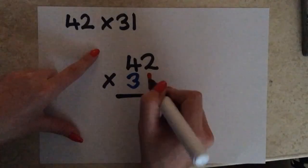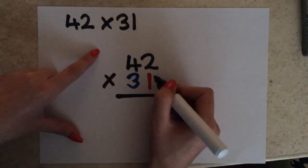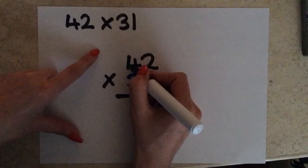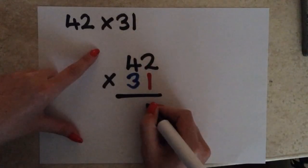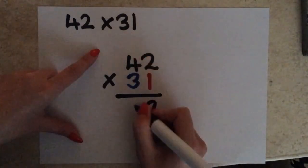So, firstly, we always start with the units. So, I'm starting with this red number here. I'm going to multiply it by the 2, and then by the 4. So, 1 times 2 is 2, and then 1 times 4 is 4.